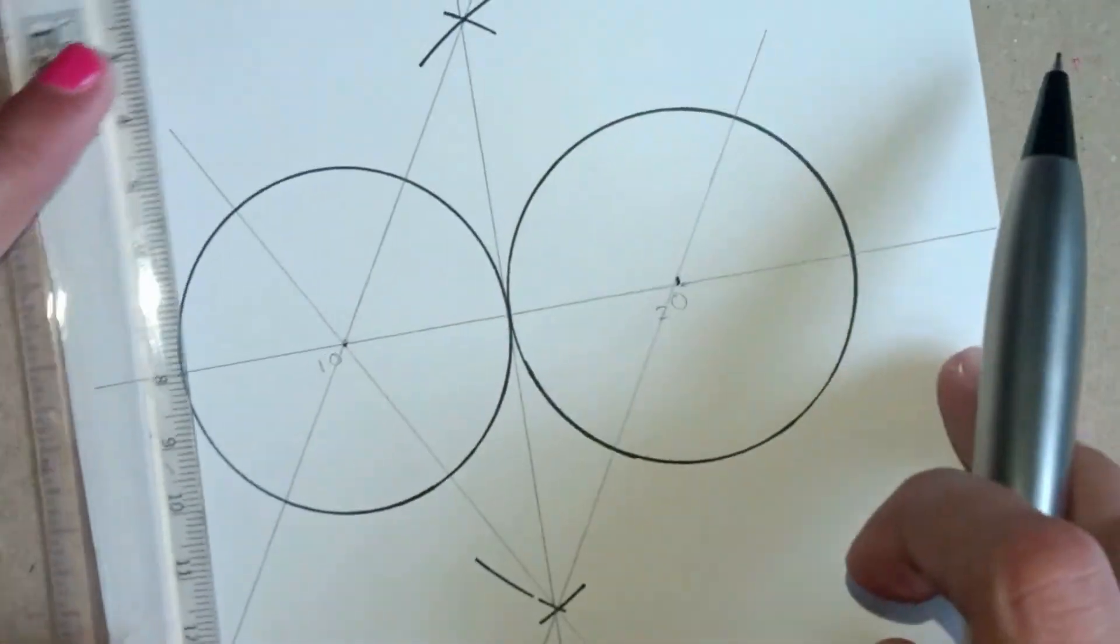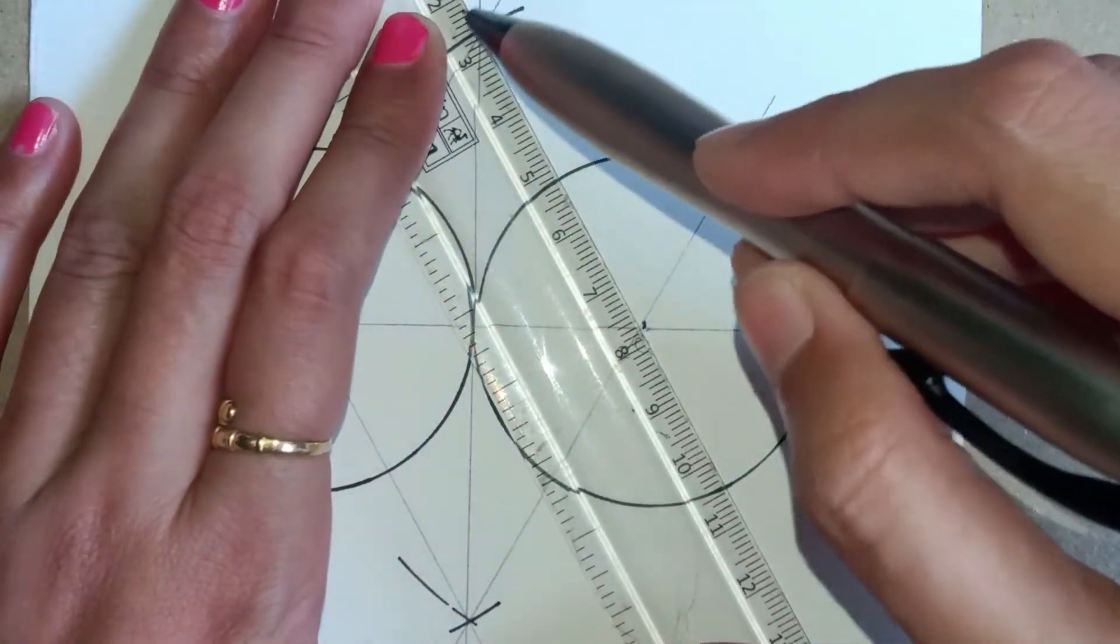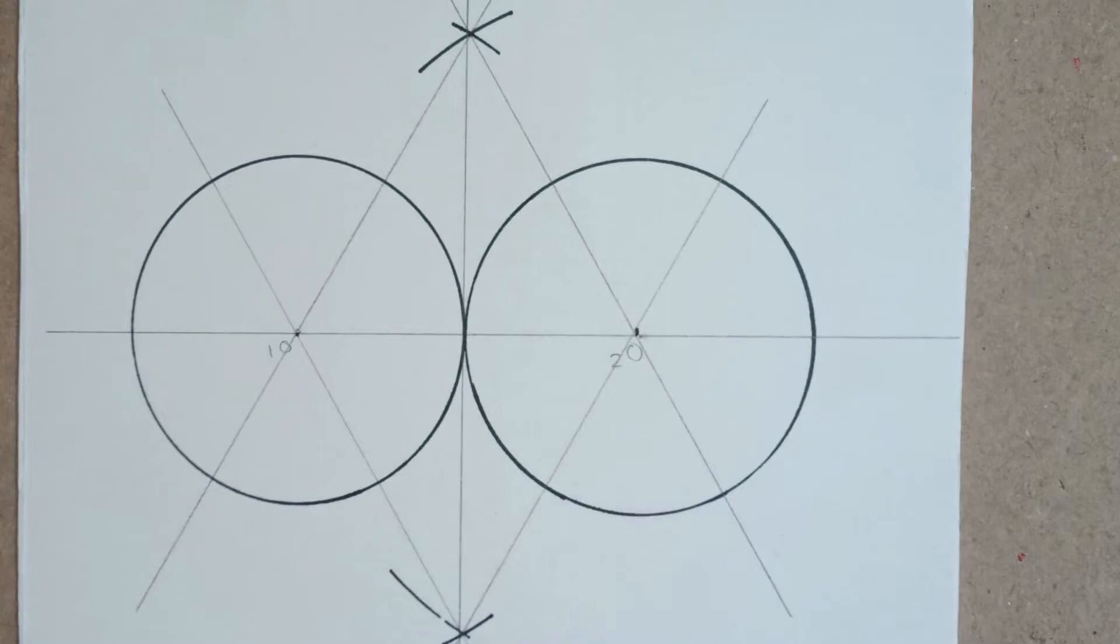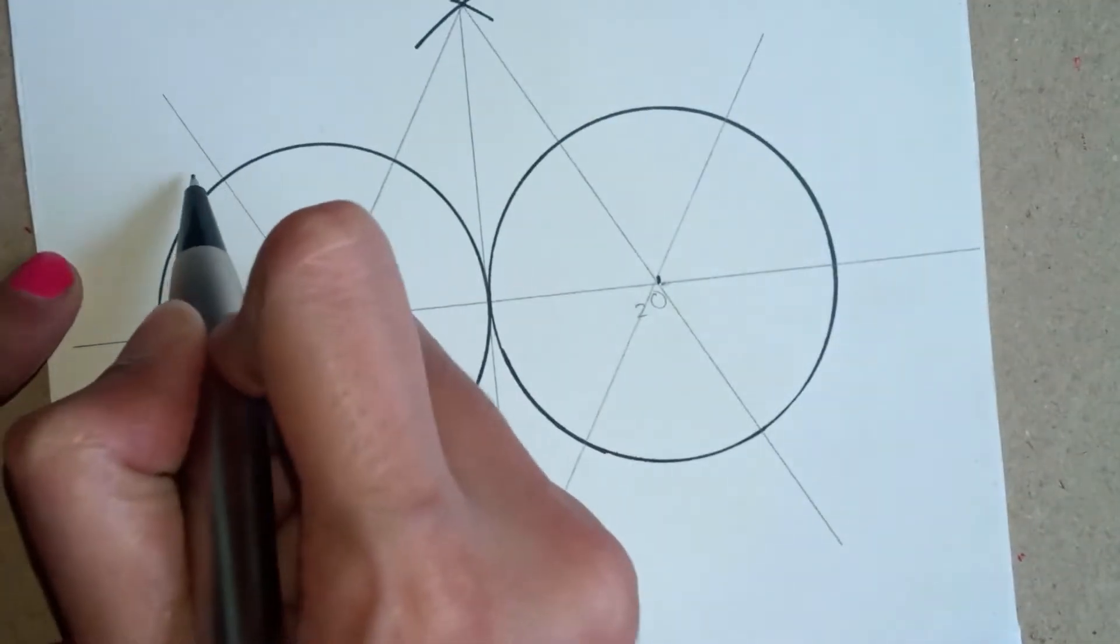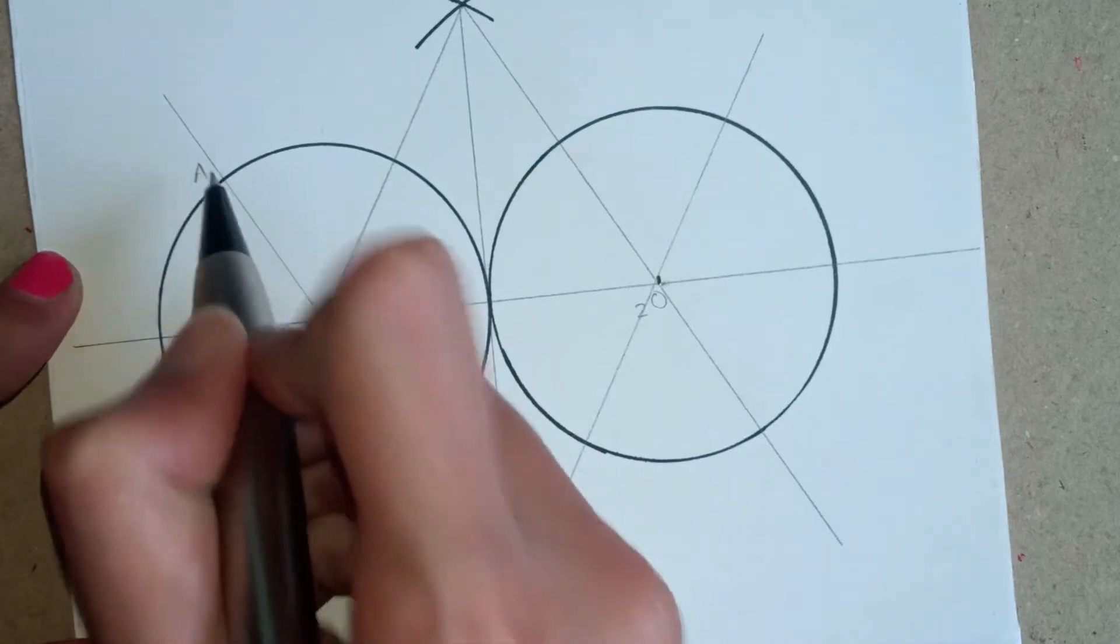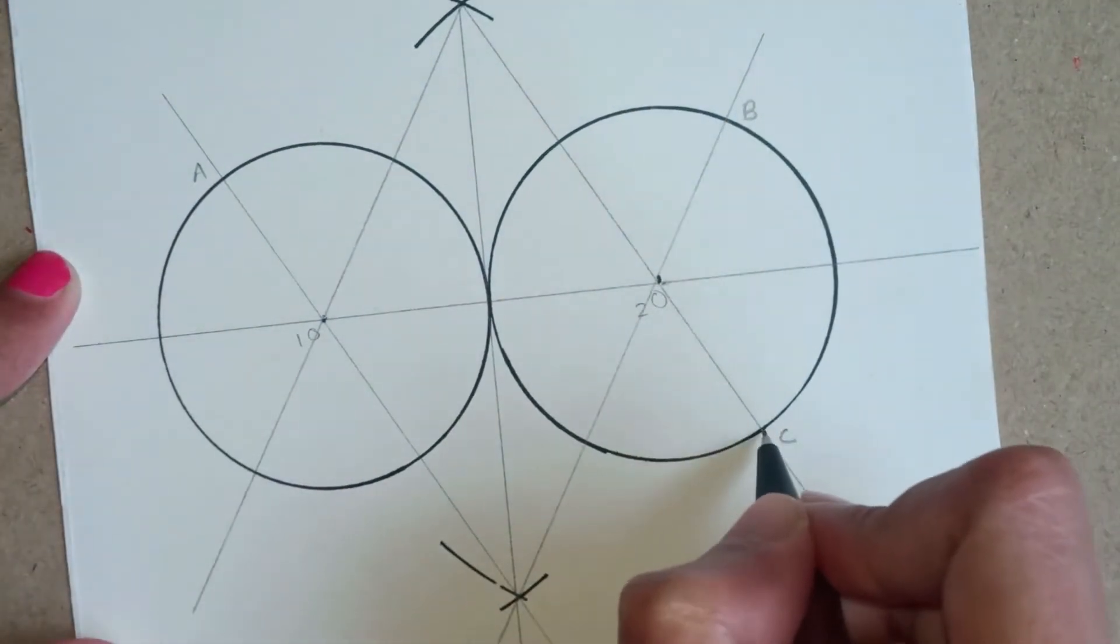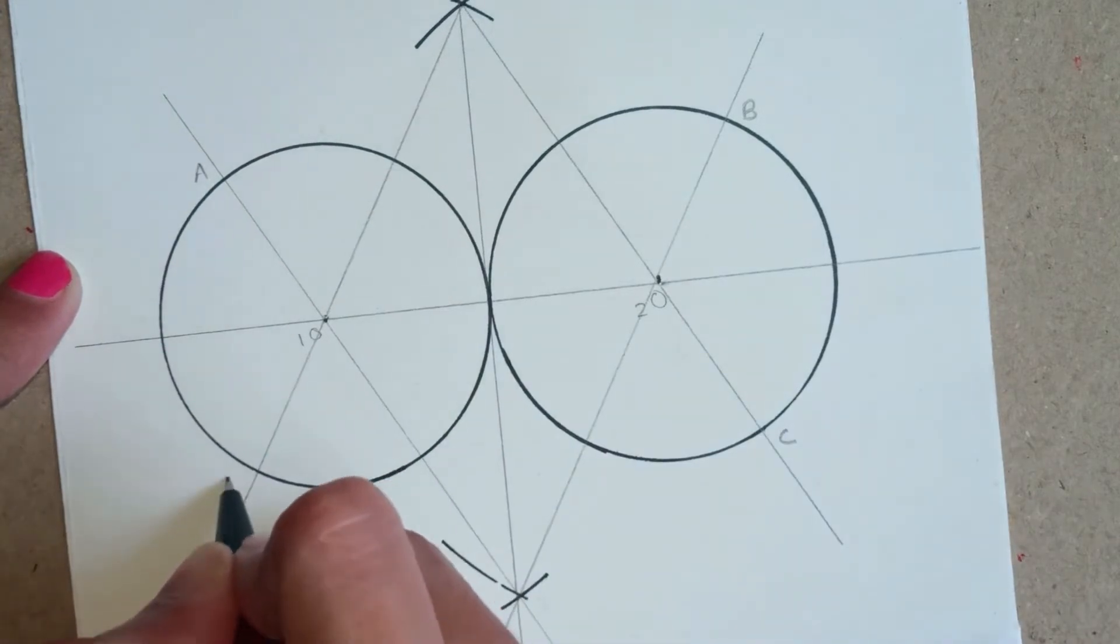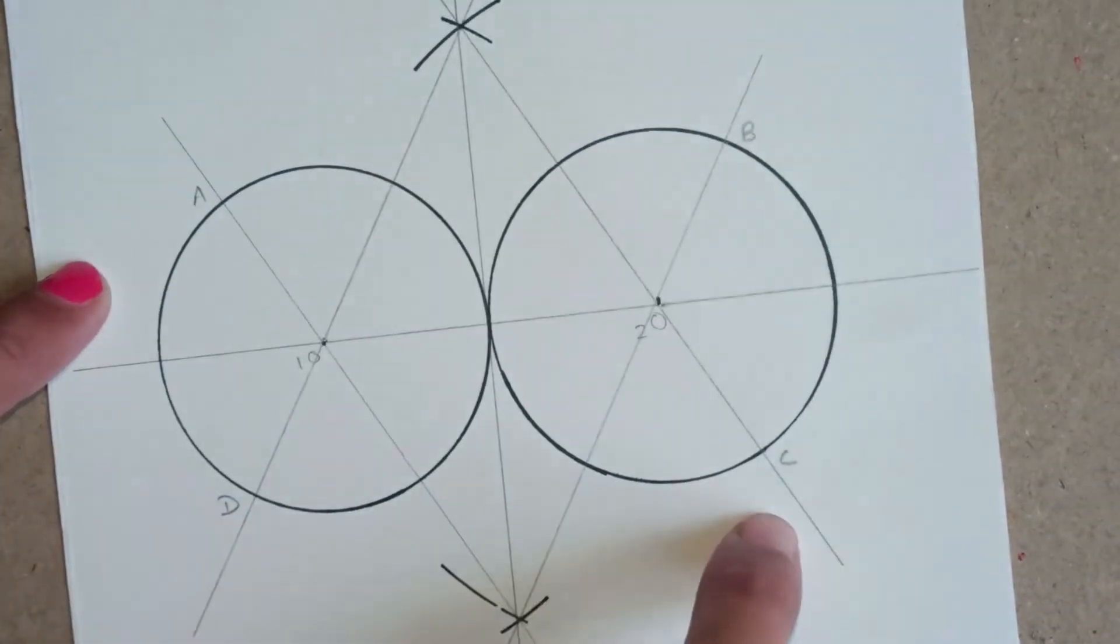the circle completely as a diameter. Now we get four lines that intersect the circles. We will name the intersecting points as A, B, C, and D. Now to draw an ellipse, we have to join A-B and C-D.